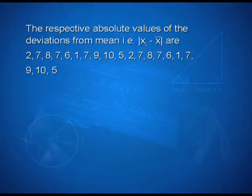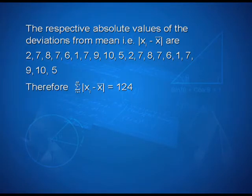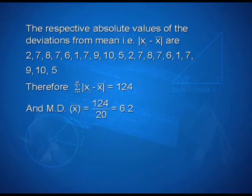The respective absolute values of the deviations from the mean, |xi − x̄|, are: 2, 7, 8, 7, 6, 1, 7, 9, 10, 5, 2, 7, 8, 7, 6, 1, 7, 9, 10, 5. Therefore, Σ|xi − x̄| = 124, and mean deviation MD(x̄) = 124 / 20 = 6.2.